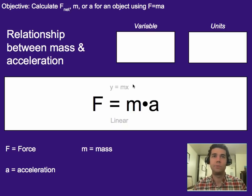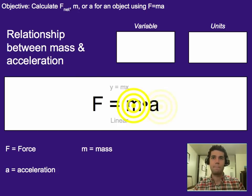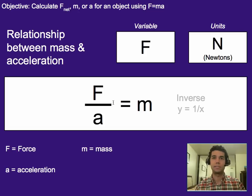One last thing, which is I want to cover the relationship between mass and acceleration. So we've got force equals mass times acceleration. That's linear. But if we wanted to look at mass versus acceleration, we want them on opposite sides of the equation symbol here. So if I divide both sides by acceleration, what I get is force over acceleration equals mass.